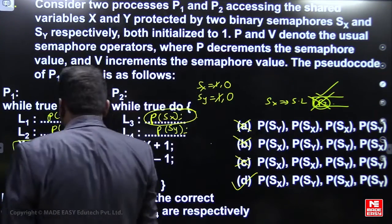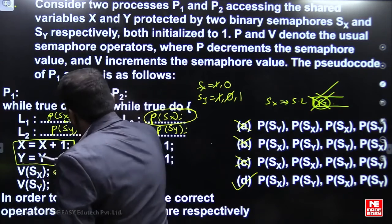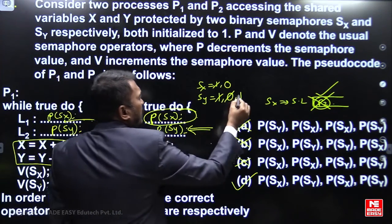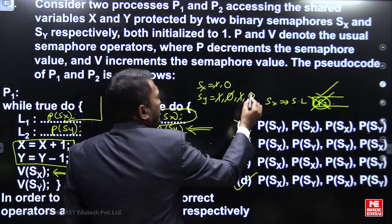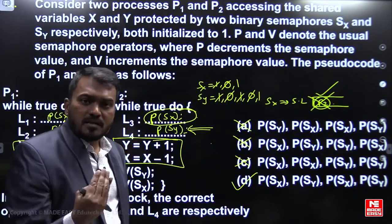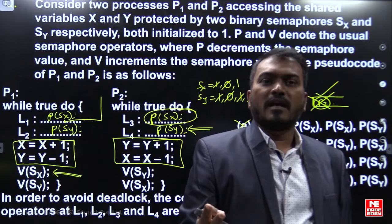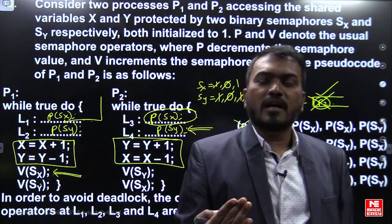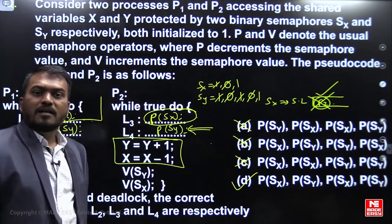P1 then says up(SY) — the SX suspended list is now empty, so SX value becomes 1. P1 completes total execution. When P2 is scheduled again, it executes from the next statement after where it suspended, so it performs down(SX): SX becomes 1 to 0, successful. P2 completes its execution and says up(SX), so SX becomes 1 again. In option D, both processes never suspend simultaneously — one by one they continue execution, so there is no deadlock. Therefore, D is the correct answer.